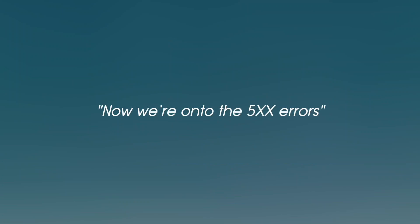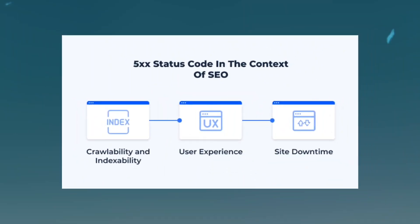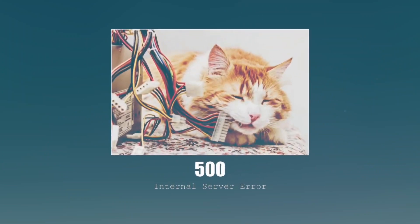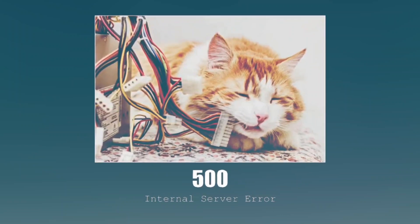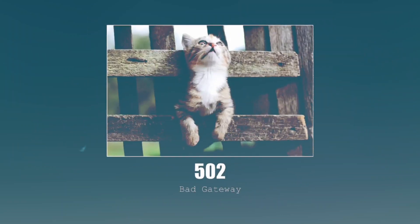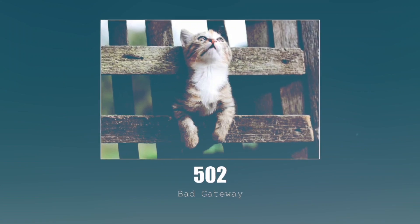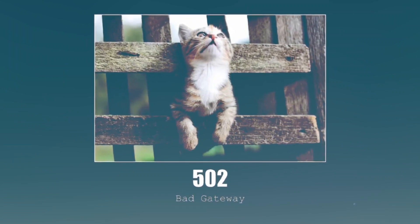Now we're onto the 5xx errors. These mean something went wrong on the server side — not your fault. 500 Internal Server Error — the server encountered something unexpected and doesn't know what went wrong. It's the 'I messed up' of the server world. 502 Bad Gateway — this one shows up when one server gets an invalid response from another server. It's like a bad game of telephone between servers.